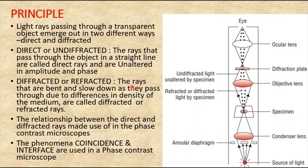The phenomena of coincidence and interference are used in the phase contrast microscope. Coincidence means that if the direct rays and the diffracted rays of an object are brought into the same phase — that is, the crests of both light waves coincide with each other — the result is an increase in amplitude due to the sum of both converging rays. This is called coincidence.